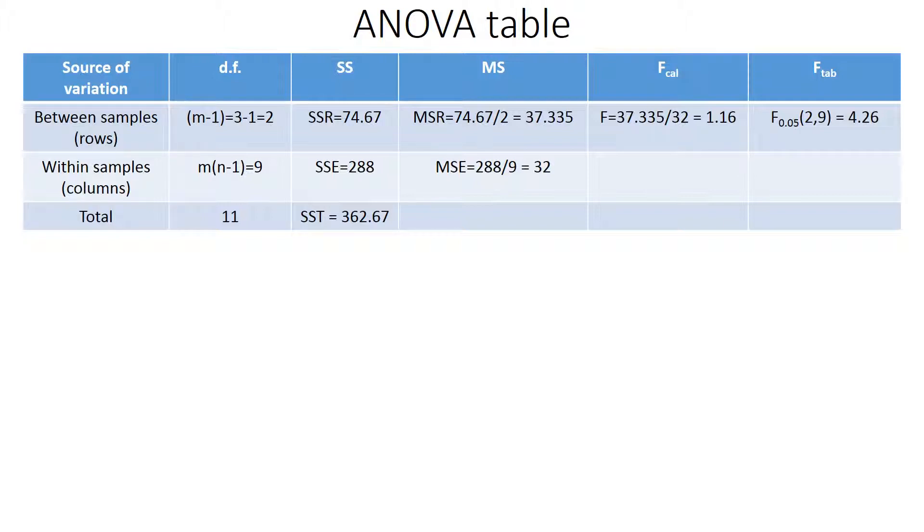4.26 is what we get. F 0.05, 2, 9 is given by 4.26. Now if you compare the F calculated and F table value, 1.16 is obviously lesser than 4.26. That is why the decision is: since F calculated is 1.16, less than 4.26, which equals F 0.05, 2, 9, we may accept our null hypothesis. So what was our null hypothesis? Our null hypothesis was all the three looms produce equal output. So that is our answer. The looms have no difference in giving an output. That is kind of simpler I guess in comparing to the initial way. I hope that was helpful.